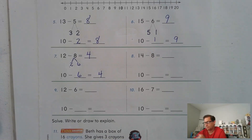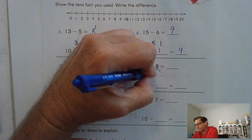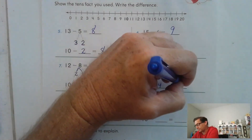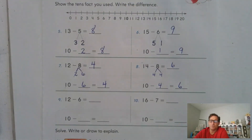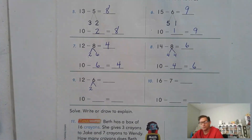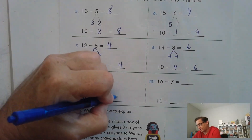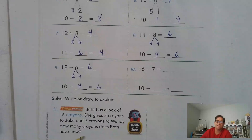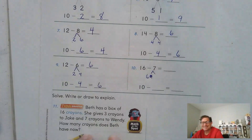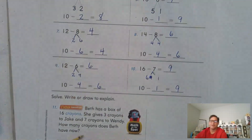14 minus 8: what do we have to subtract from 14 to make a 10? Four. And we know that 4 plus 4 is 8, so 14 take away 4 is 10, and 10 minus 4 is 6. For 12 minus 6: we subtract 2 from 12 to get 10, and then we have 4 left to take away — 10 minus 4 is 6. For 16 minus 7: we subtract 6 to get to 10, and then subtract 1 more. So 16 minus 7 is 9.